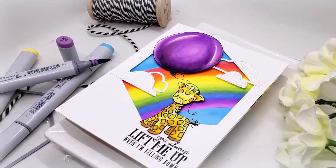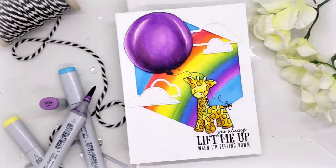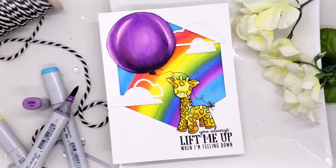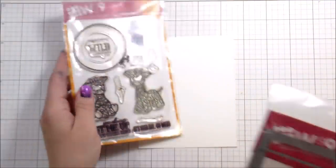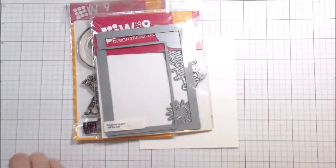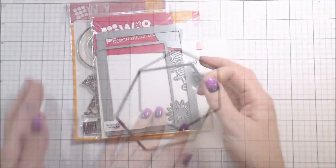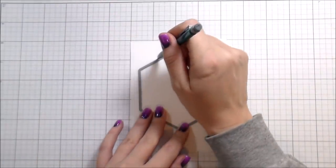Hi guys, it's Kelly Latavola here and I'm back with another video for W Plus Nine. Today we're using a mix of older and newer products. I'm using the adorable giraffe from Party Animal, which is a well-loved set of mine, the Sunshine Layers die, and our hexagon dies.